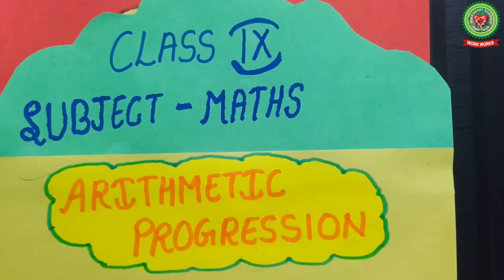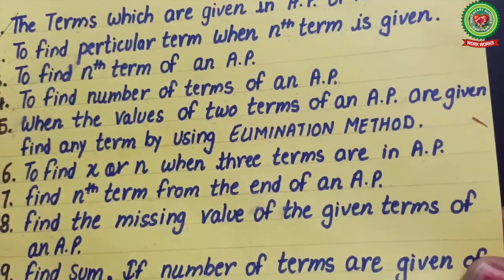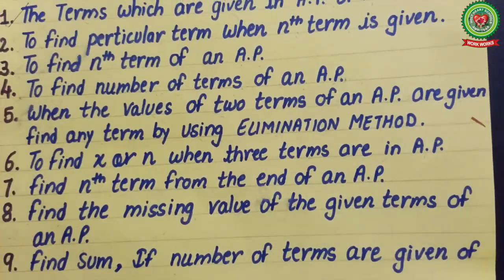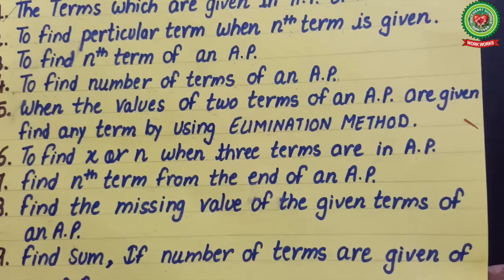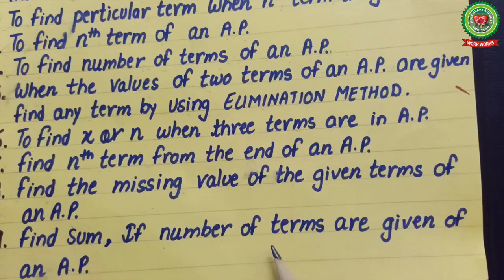Hello everyone, today we will recapitulate and practice the last type of this chapter — arithmetic progression. As earlier we have done all eight objectives of this chapter, today we will continue with our ninth objective: finding the sum when the number of terms of an AP are given. Before proceeding, we will recapitulate what we have done in previous types.